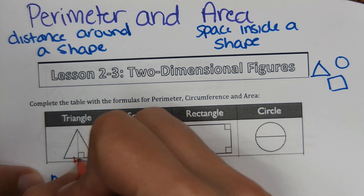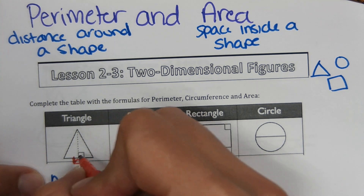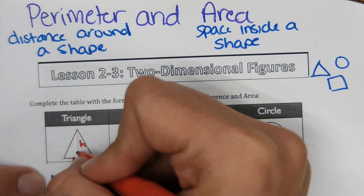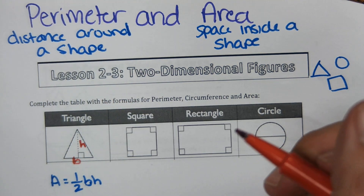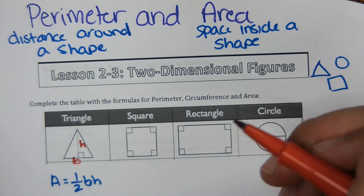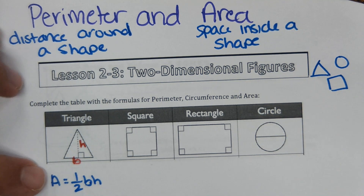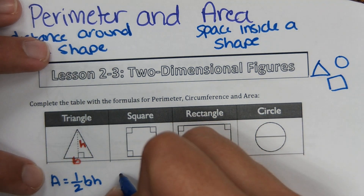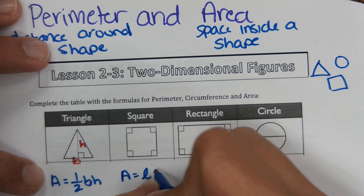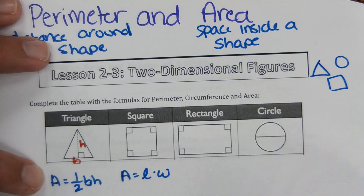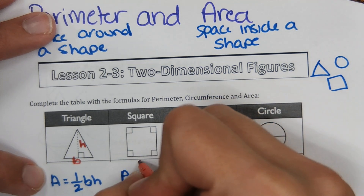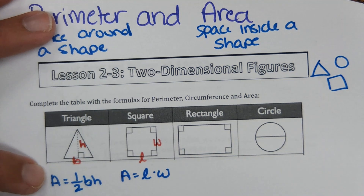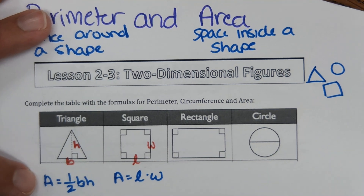On a triangle, this would be the base, and the height is perpendicular to the base up to that top corner. The area of a square is length times width, and for a square those two numbers are going to be the same value — just multiply those two numbers to find the area.